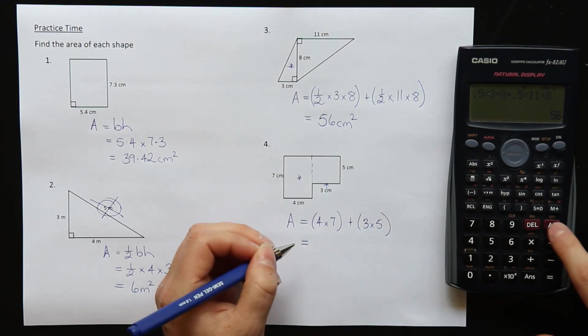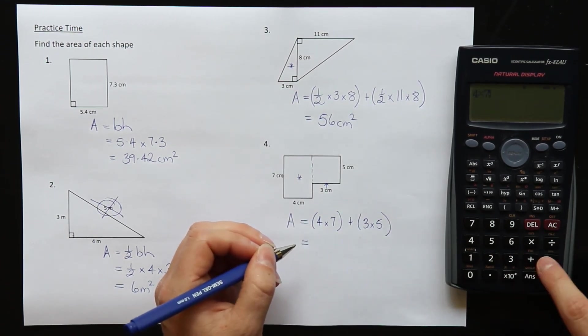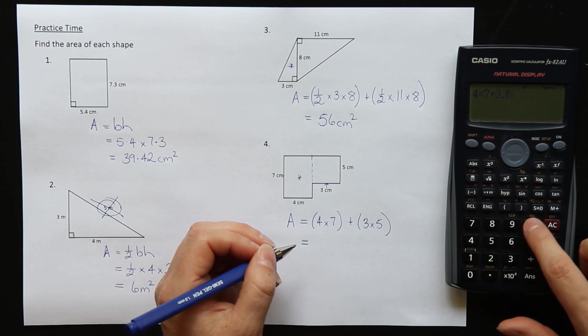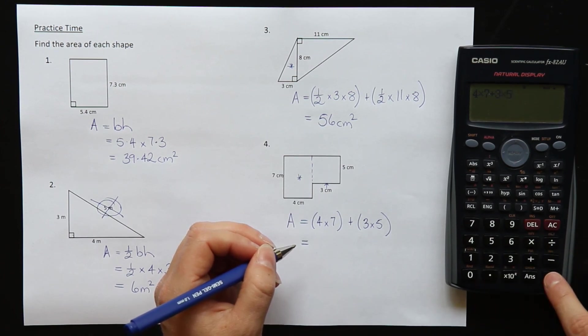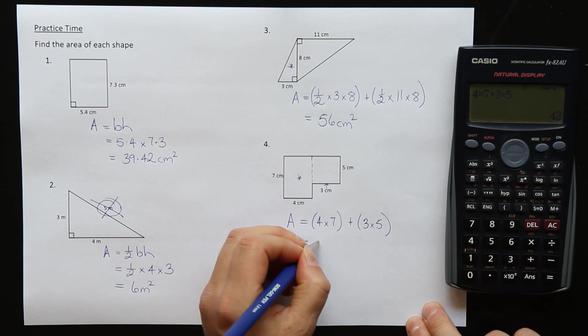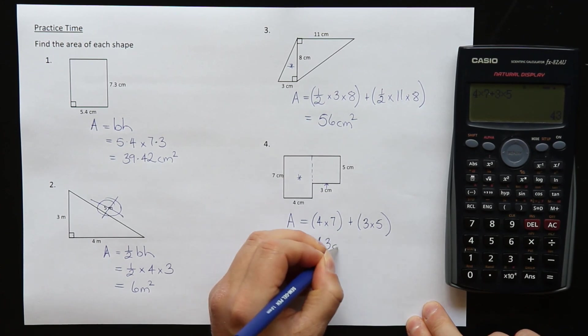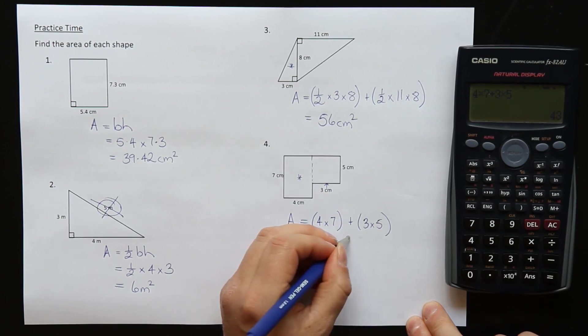And calculate 4 times 7 plus 3 times 5. Oops, missed the times. Fix that up. There it is. 43 centimeters squared.